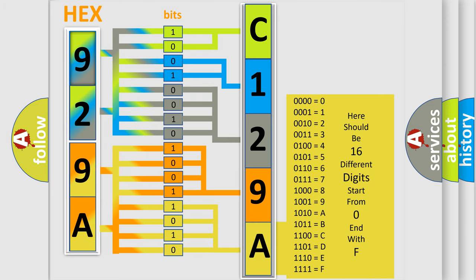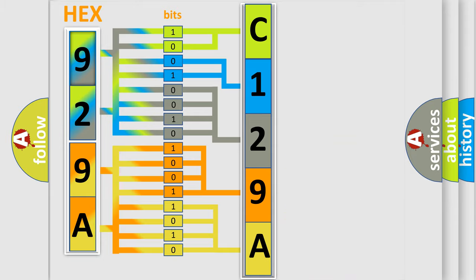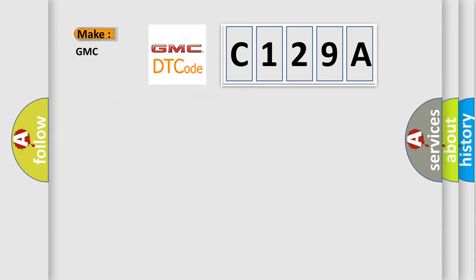We now know in what way the diagnostic tool translates the received information into a more comprehensible format. The number itself does not make sense to us if we cannot assign information about what it actually expresses. So, what does the diagnostic trouble code C129A interpret specifically for GMC car manufacturers?